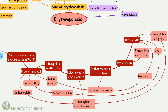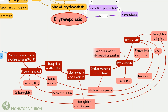It is the reticulocyte that enters into the circulation and then matures to RBC. Normally their count in blood is less than 1% of total RBCs. They have a reticulum of disintegrated organelles, because of which they are called reticulocytes.